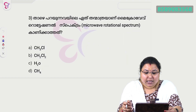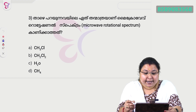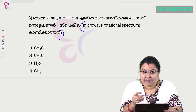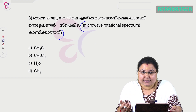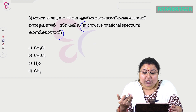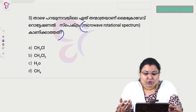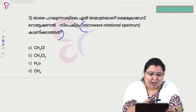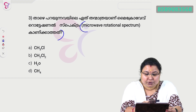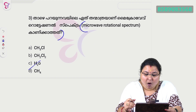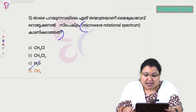Let's take a look at the next question. How much is the microwave rotation spectrum? In spectroscopy we have a few questions. We have to learn about the microwave spectrum. The options are CH3Cl, CH2Cl2, H2, and CH4. The correct answer is CH4 — that is Option D for the microwave spectrum.